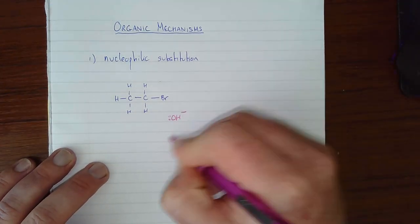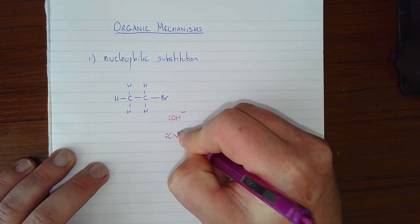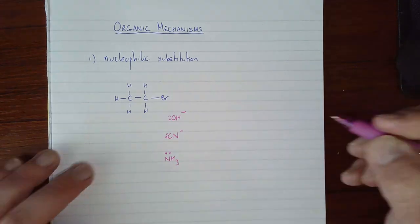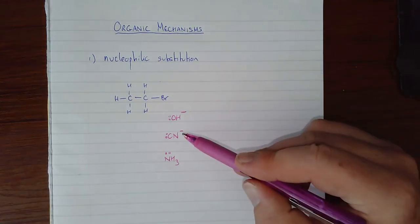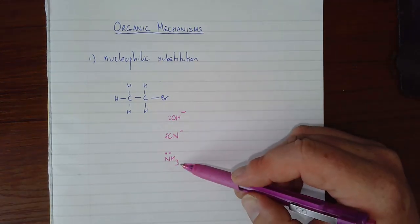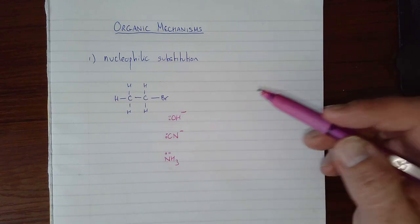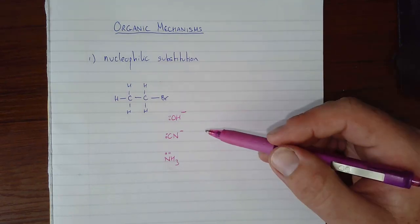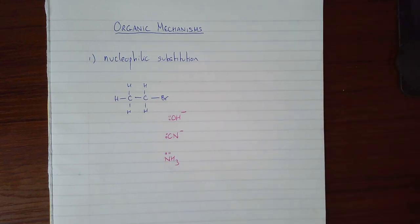This is something that happens to haloalkanes. There are three different nucleophiles which can react with a haloalkane: hydroxide ion, cyanide ion, or ammonia molecule. Don't forget your definition of a nucleophile - it's an electron pair donor. It's nothing to do with redox.